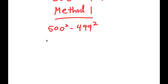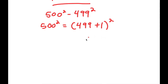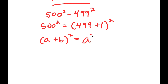For Method 1, start by rewriting 500 squared. 500 squared is the same thing as (499 + 1) squared. If we have something in the form (a + b) squared, this is equal to a squared plus 2ab plus b squared.